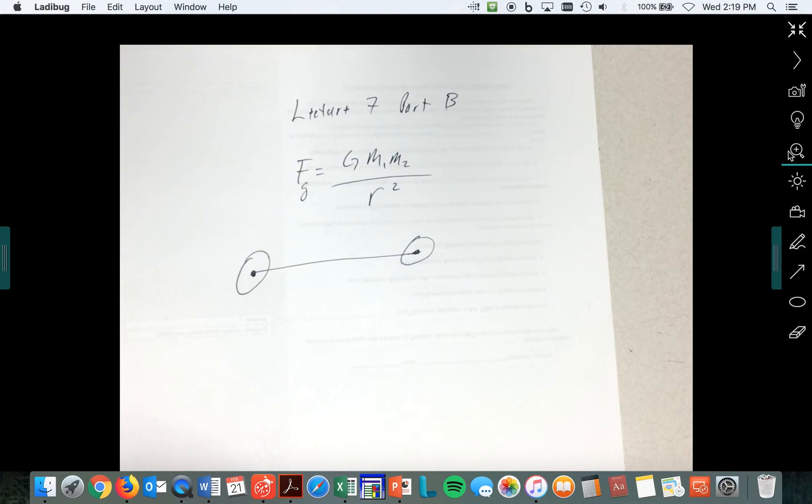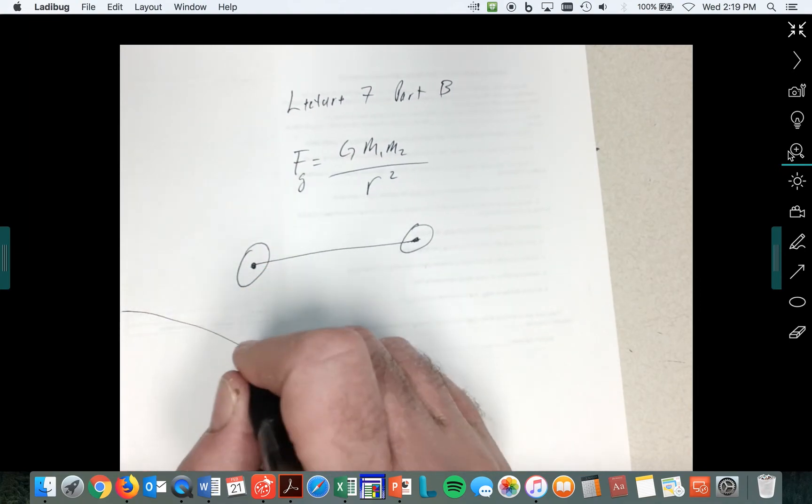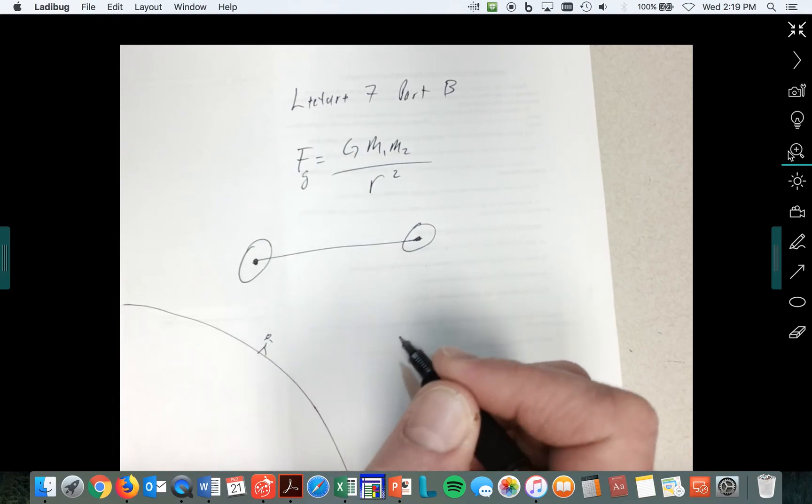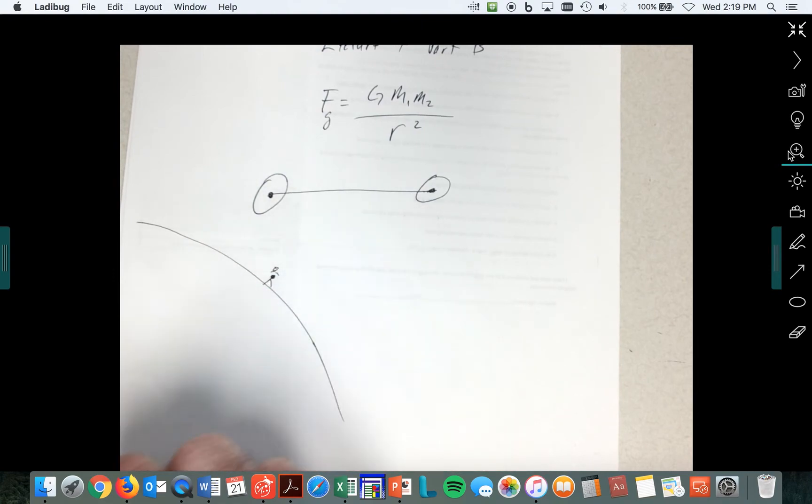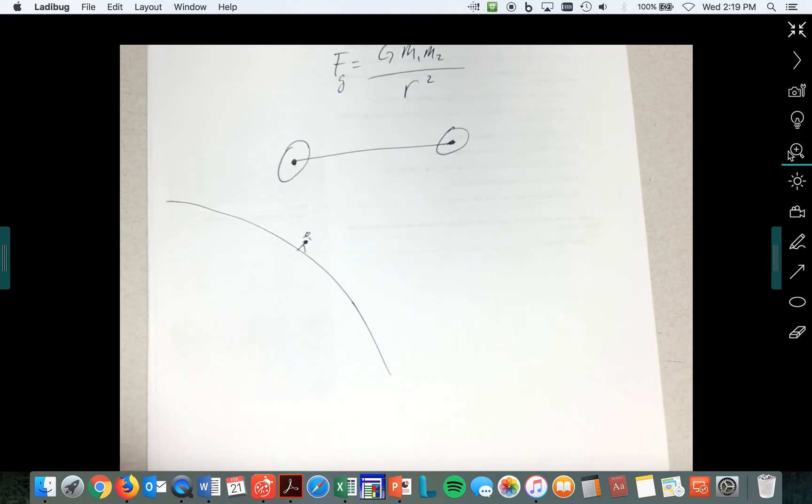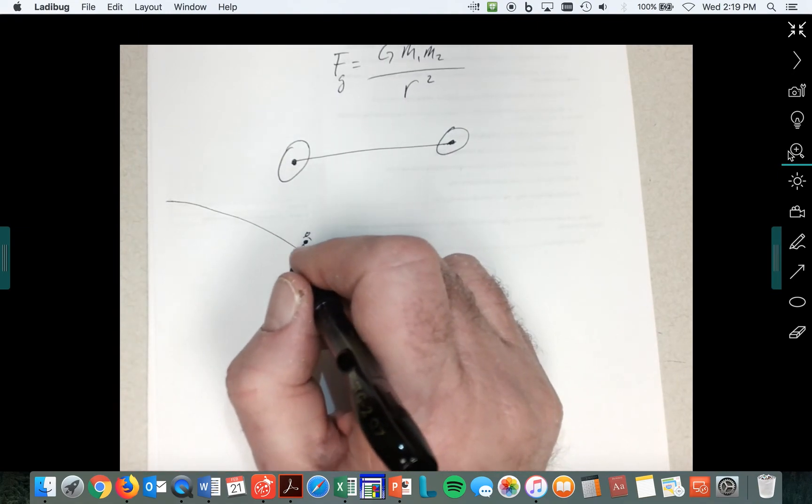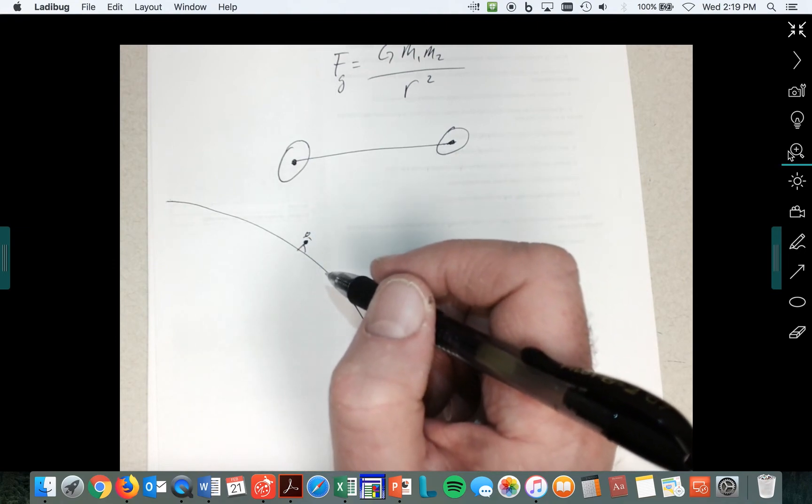And this R is the distance between the centers of objects, between their centers of mass. So if we look at the big old earth, here's the big old earth. And we look at this little bitty guy standing on this big old earth. Here's his center mass. Center mass of the earth is way down in here somewhere. Let's figure out what the force is that he's feeling.